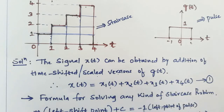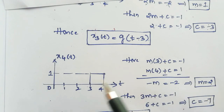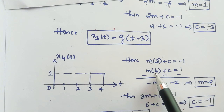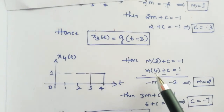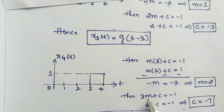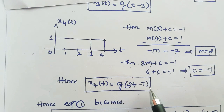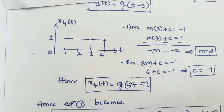For the fourth step, which goes from 3 to 4, the left point is 3: M × 3 + C = −1. The right point is 4: M × 4 + C = 1. Subtracting gives −M = −2, so M = 2. Substituting back: 6 + C = −1, giving C = −7. Therefore X4 of T = G(2T − 7).